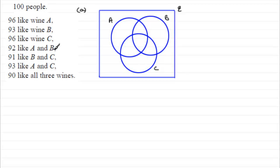With something like this, always go to the region where you can put the value you know for that one particular region. And that's this 90 — 90 people like all three wines. So we can clearly put that in that central region there. Then work backwards. 93 like A and C. We've already got 90 liking all three, so that leaves us with three that like just A and C, but not B.